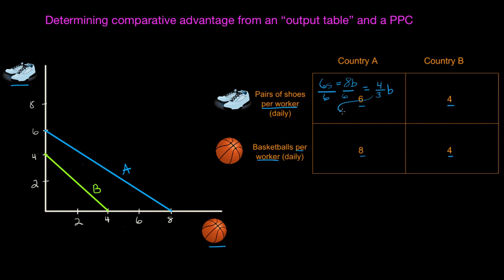I like to convert these fractions to decimals because it's easier to compare decimals against one another than it is to compare fractions, which may have different denominators. Converting four-thirds to a decimal gives me an opportunity cost of 1.33 basketballs per pair of shoes produced in country A.